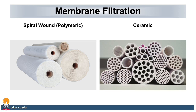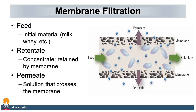The two most common types of membranes are spiral wound polymeric and ceramic. Polymeric membranes are very commonly used in the dairy industry for all membrane filtration applications, from reverse osmosis to ultrafiltration and microfiltration. Ceramic is not very commonly used in the United States, but is very good for applications involving viscous products. Membrane filtration uses pressure to separate milk components. Feed is the initial material, which could be milk or whey. This is fed into the system and concentrated via membrane filtration. The concentrate is the retentate and retains the product that we want. Permeate, which is a molecule that is pushed across the membrane, may also be saved or discarded.